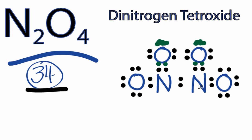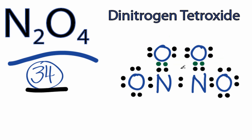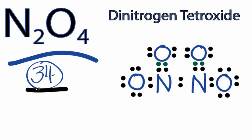And that should complete the octets for the nitrogen. You can see that the oxygens have eight valence electrons still, and now the nitrogens have eight valence electrons as well. We're still using 34 valence electrons. So in the Lewis structure for N2O4, we're able to use all the valence electrons and complete the octets on each atom by forming those double bonds with the oxygens and the nitrogens.